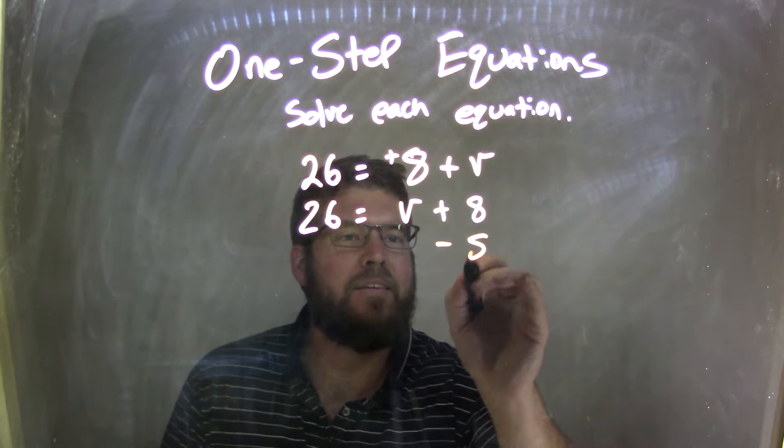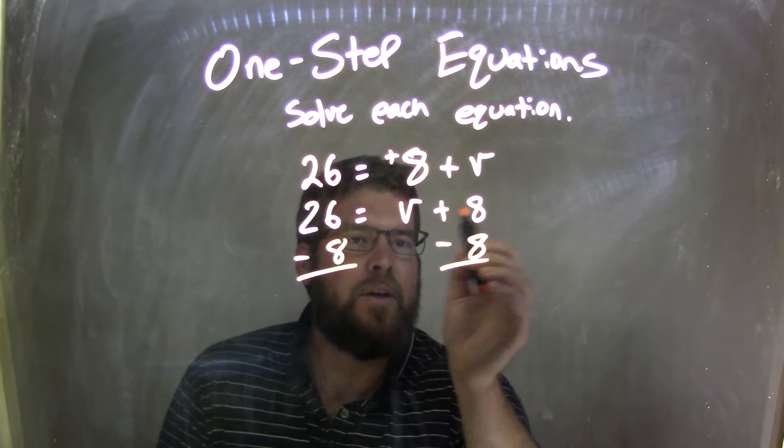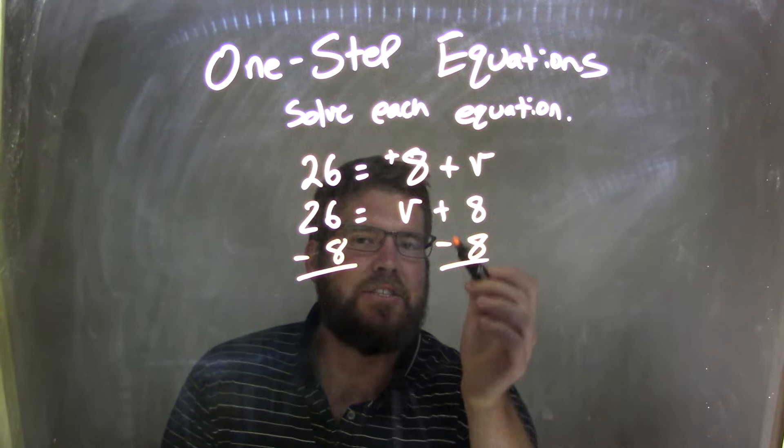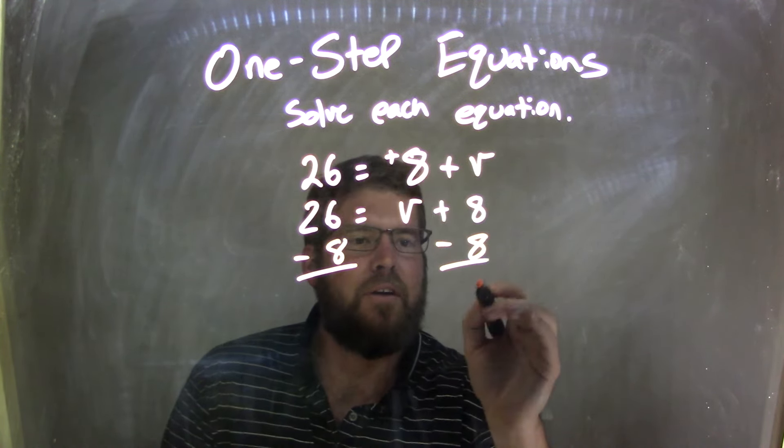So now I just have to subtract an 8 from both sides, minus 8. So I take that V plus the 8 there, opposite of addition is subtraction, so I've been subtracting an 8, that becomes a 0, cancels out.